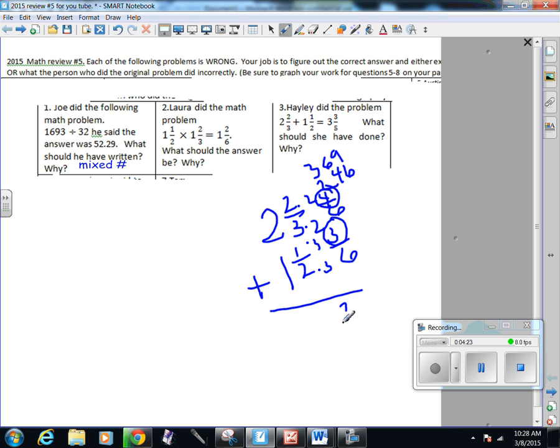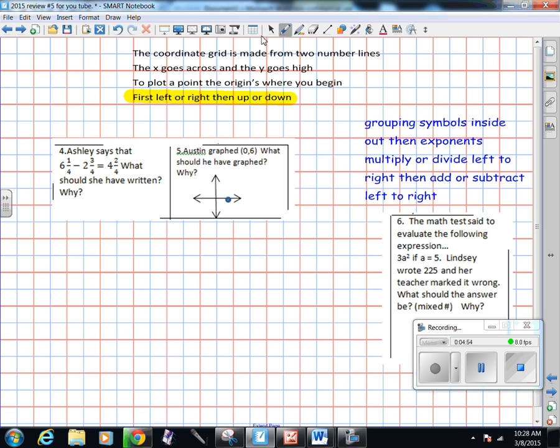And then I just add my numerators, so 4/6 plus 3/6, that's 7/6. I need to change that into a mixed number, and when I do that I get 1 and 1/6. And I need to add my whole number, so 2 plus 1, that's 3, plus this other one, that's 4. So it's 4 and 1/6.